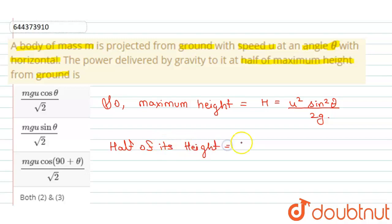So we denote H/2 by y. So y = u² sin² θ / 4g. Okay, so here we find the half of its maximum height.